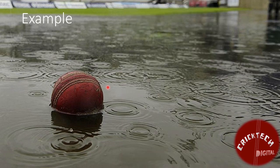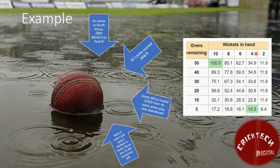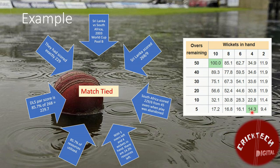To understand better, let's take a real match example. In 2003, Sri Lanka played South Africa in World Cup Pool B. Sri Lanka batted first and scored 268 for 9 from their 50 overs. Chasing a target of 269, South Africa had reached 229 for 6 from 45 overs when play was abandoned. From the table, with 5 overs left and 4 wickets in hand, they had 14.3% resources left, meaning they had utilized 85.7% of resources to get to 229 runs. The DLS par score is 85.7% of 268 runs, which is 229.7 runs. Therefore, South Africa's retrospective target from their 45 overs was 230 runs to win or 229 to tie. As they had scored exactly 229, the match was declared a tie.